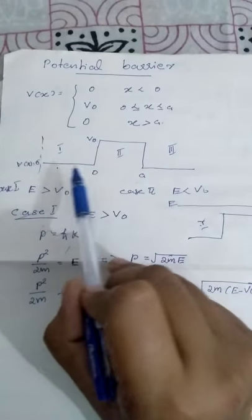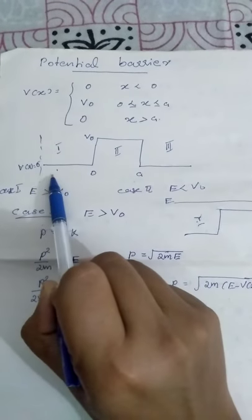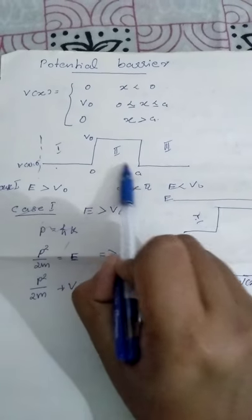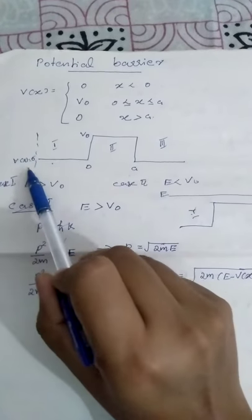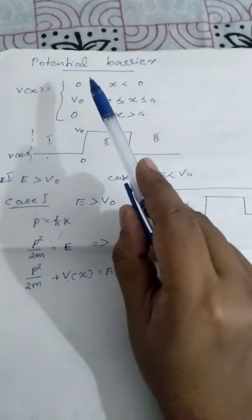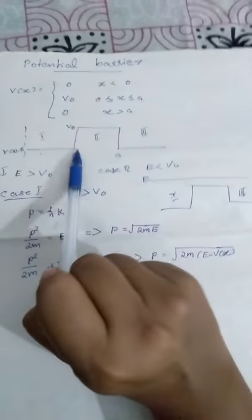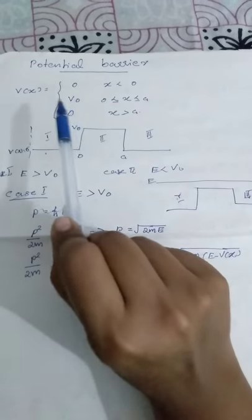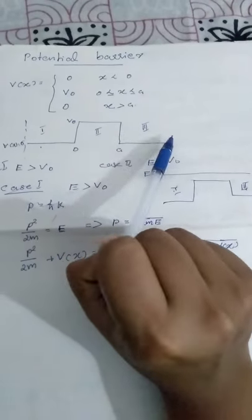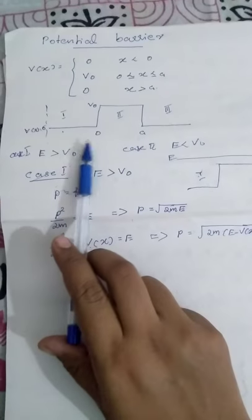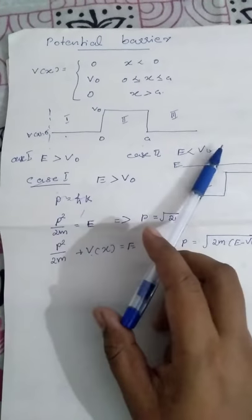We define three regions. In region 1, x less than 0, the potential energy V(x) equals 0. In region 2, from 0 to A, the potential energy V equals V0. In region 3, from A to positive infinity, the value of V(x) is 0 again. So we have to check this potential barrier profile and the potential distribution.